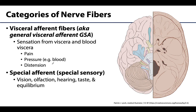Visceral afferent fibers convey information from hollow organs and blood vessels back to the central nervous system. The type of information includes pain or subconscious visceral reflex information like blood pressure levels or over-distension of an organ. We're typically not as conscious of these, and they are much more vaguely localized compared to the precise dermatomal maps seen with somatic afferents — but we certainly can have sensation associated with these structures.